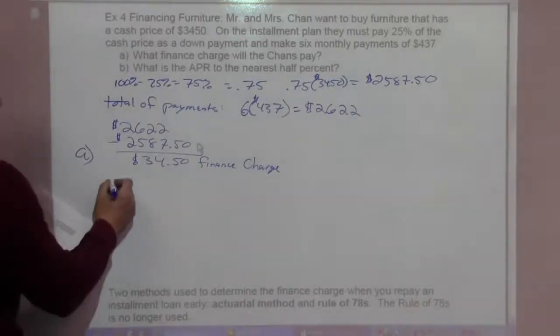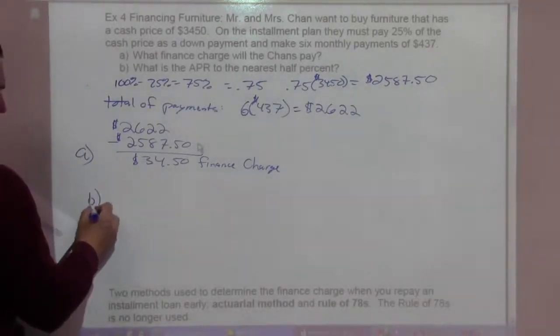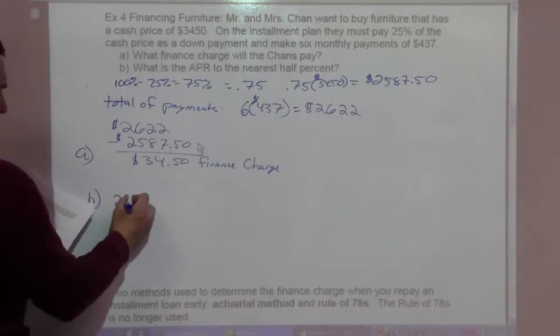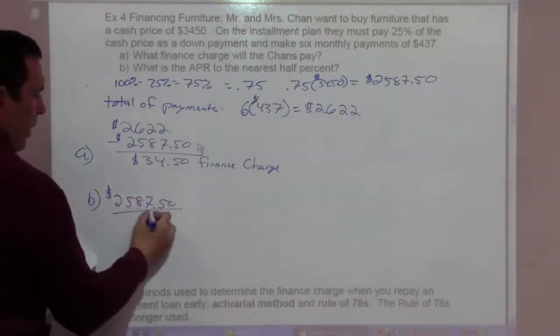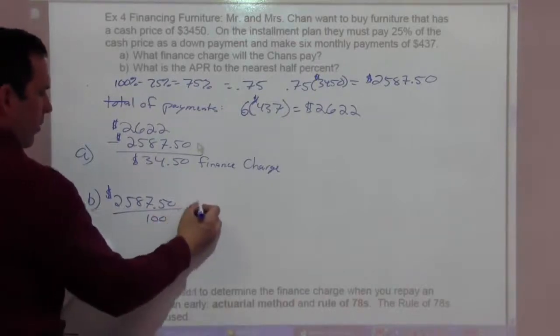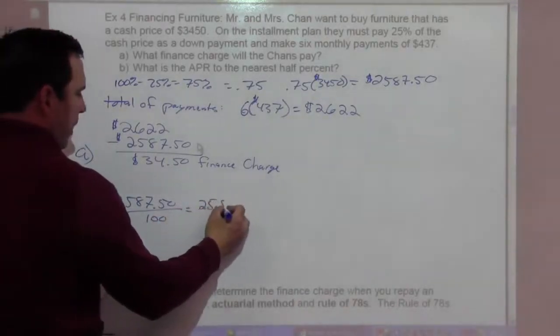So we take our amount borrowed, our $2,587.50. We divide that by 100 to get the number of hundreds borrowed, and that's going to be 25.875.